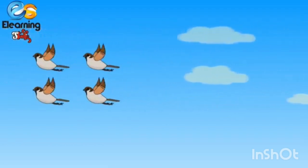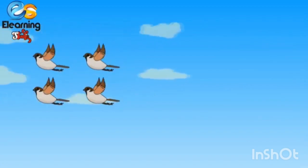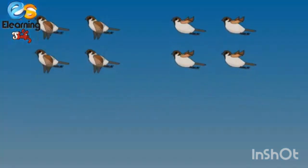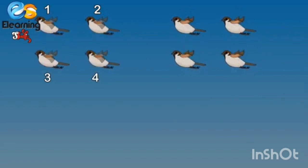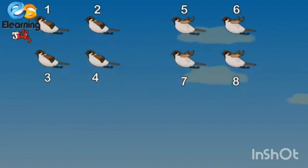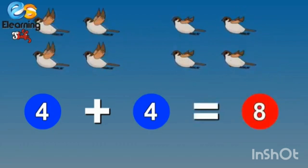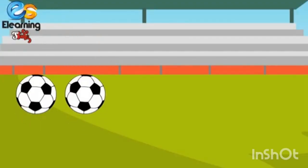Wow children, see — there are four birds flying in the sky and four more birds come. How many birds are flying in the sky now? One, two, three, four, five, six, seven, eight. There are eight birds flying in the sky. So children, four plus four is equal to eight.